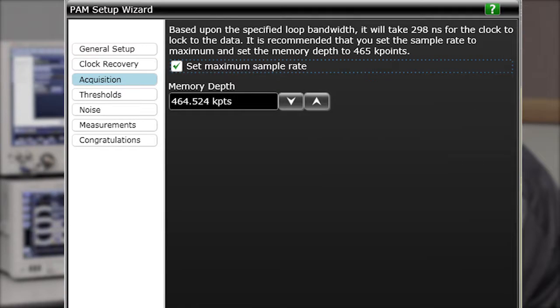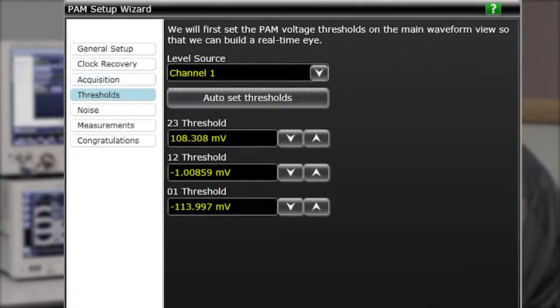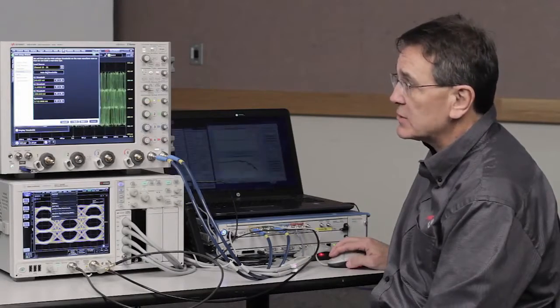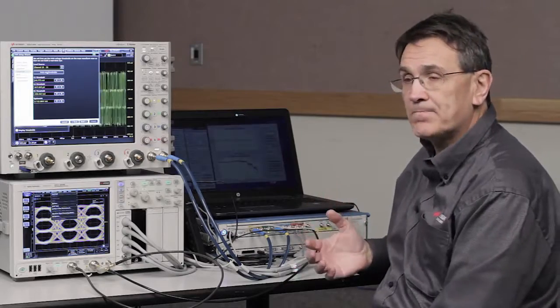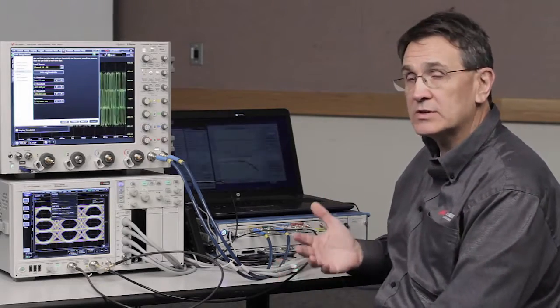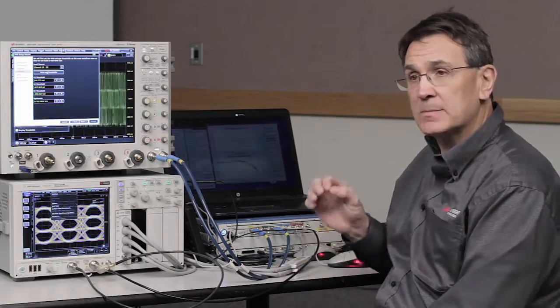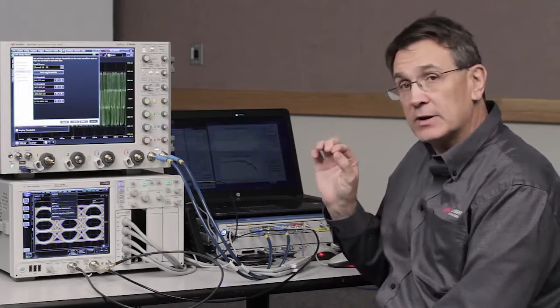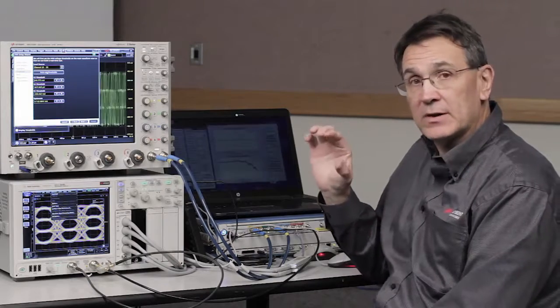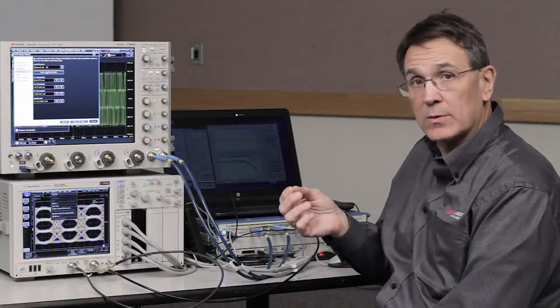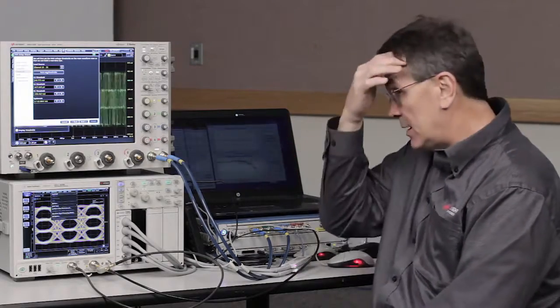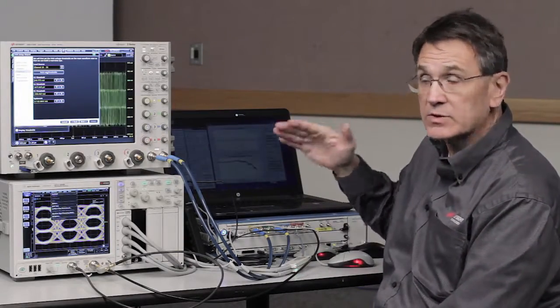Now we'll go forward and the memory depth is picked automatically. And then the next step is to set the thresholds. So based on what we've described so far, the software will do its best guess as to where these thresholds are. So for PAM-4, this is important because where you set the thresholds differentiates where the bit values are registered for the symbols. So whether they're 0-0, 0-1, 1-0, or 1-1 will depend upon where the thresholds are set.